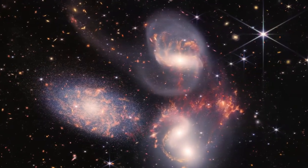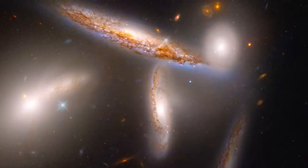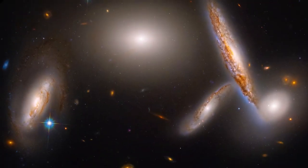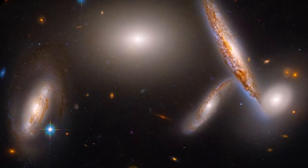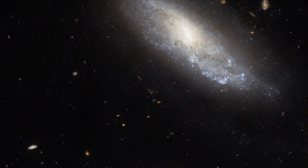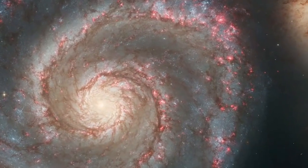But the adventure doesn't stop there. In NGC 7320, the closest galaxy on the left, Webb's gaze unveils individual stars, illuminating the galaxy's brilliant core. And as an added bonus, a vast sea of distant background galaxies emerges, reminiscent of Hubble's deep fields, painting a stunning cosmic panorama.